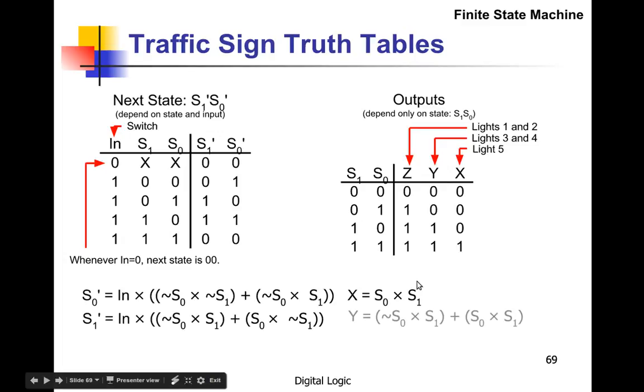Y is equal to—we're going to have two terms: S1 and S0 not, and the other term is S0 and S1. So there we go. And Z is going to have three terms because there's three ones—one, two, three. So here are the three terms for Z.